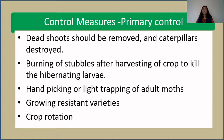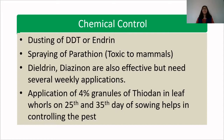The second control method is chemical control, which is very effective but cannot eradicate 100% of the pest. Some methods include dusting with DDT or endrine, and spraying of parathion — though parathion is toxic to mammals and is not recommended. Dieldrin and diazinon are also effective but require several weekly applications. Application of 4% granules of thiodon in leaf whorls on the 25th and 35th day of sowing helps in controlling the pest.